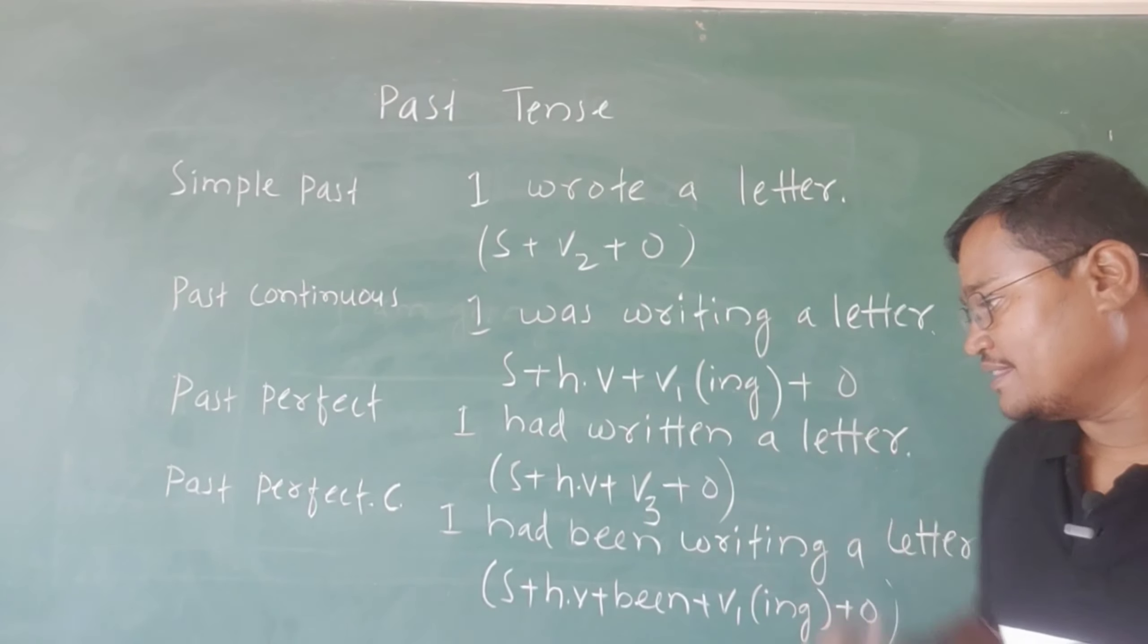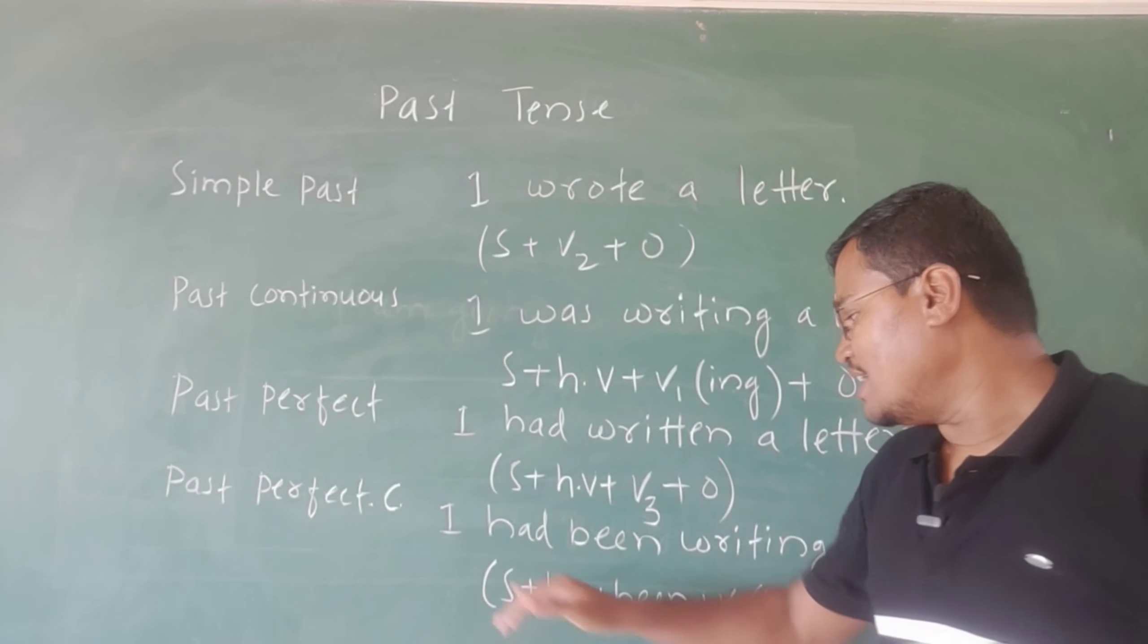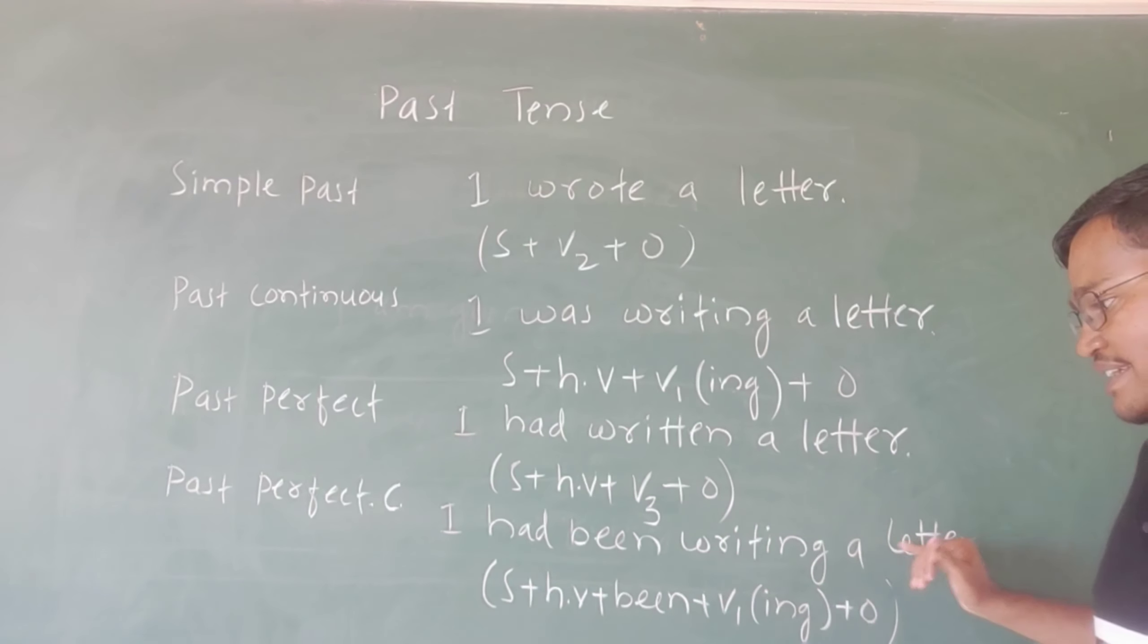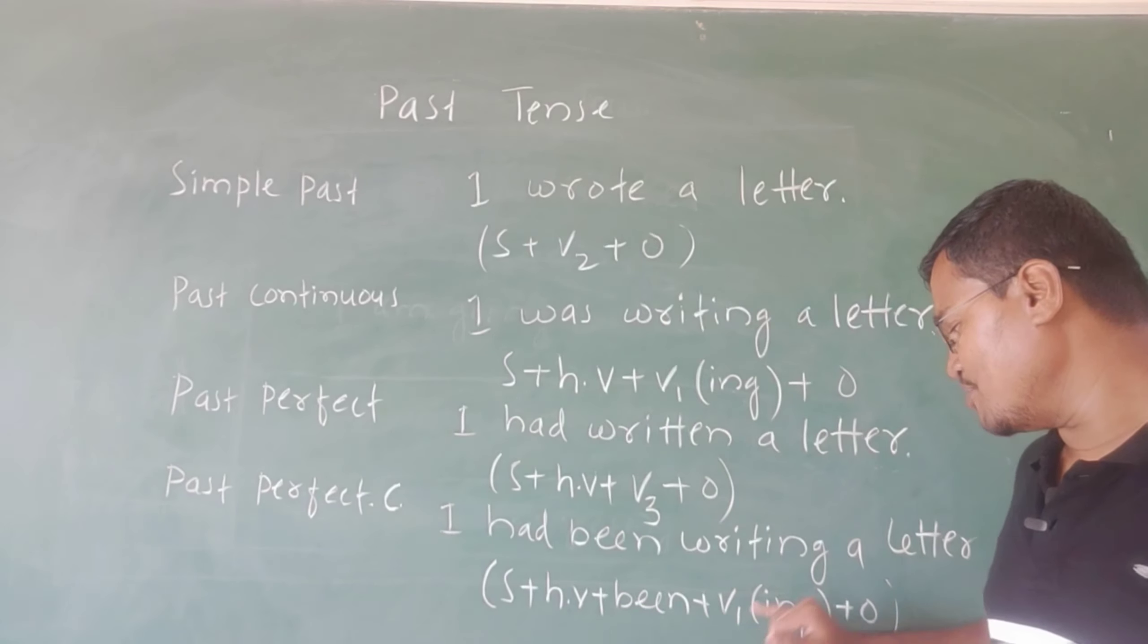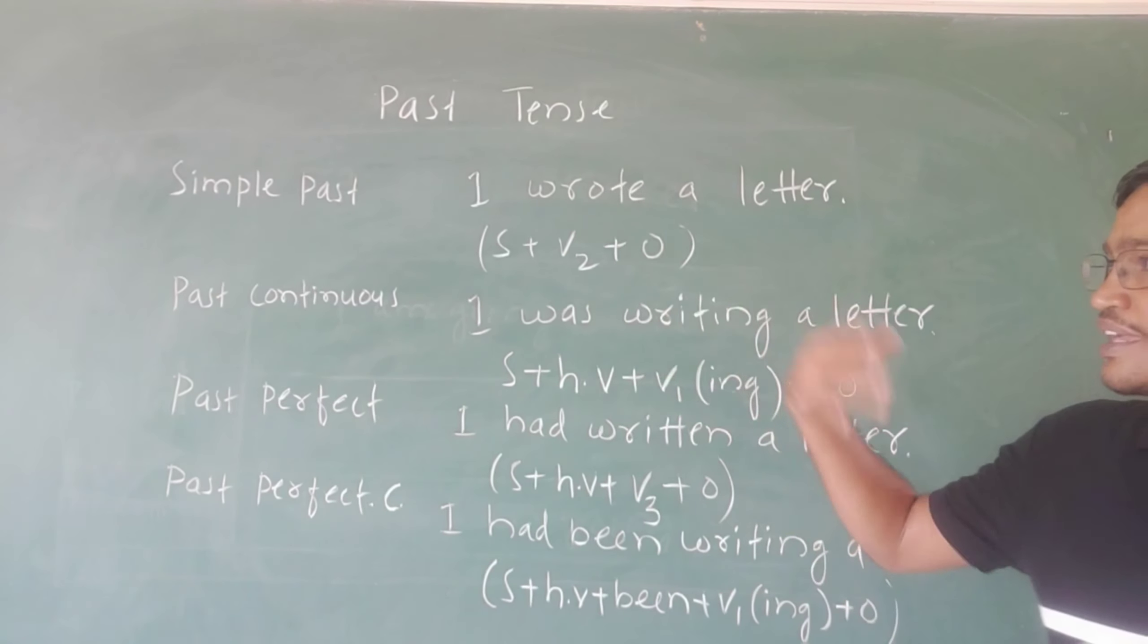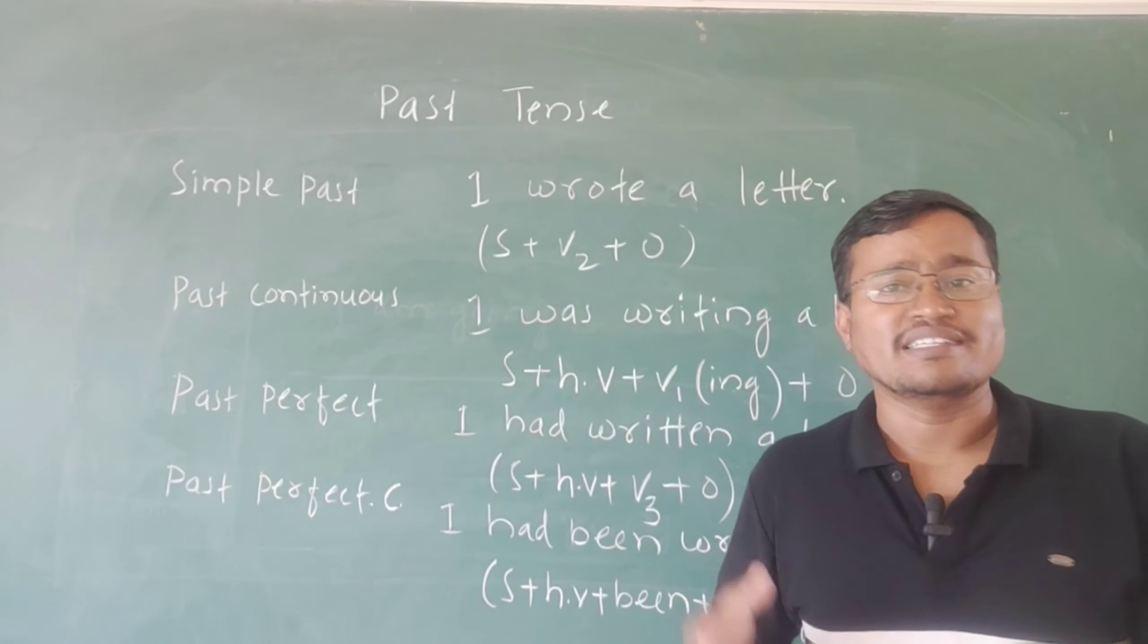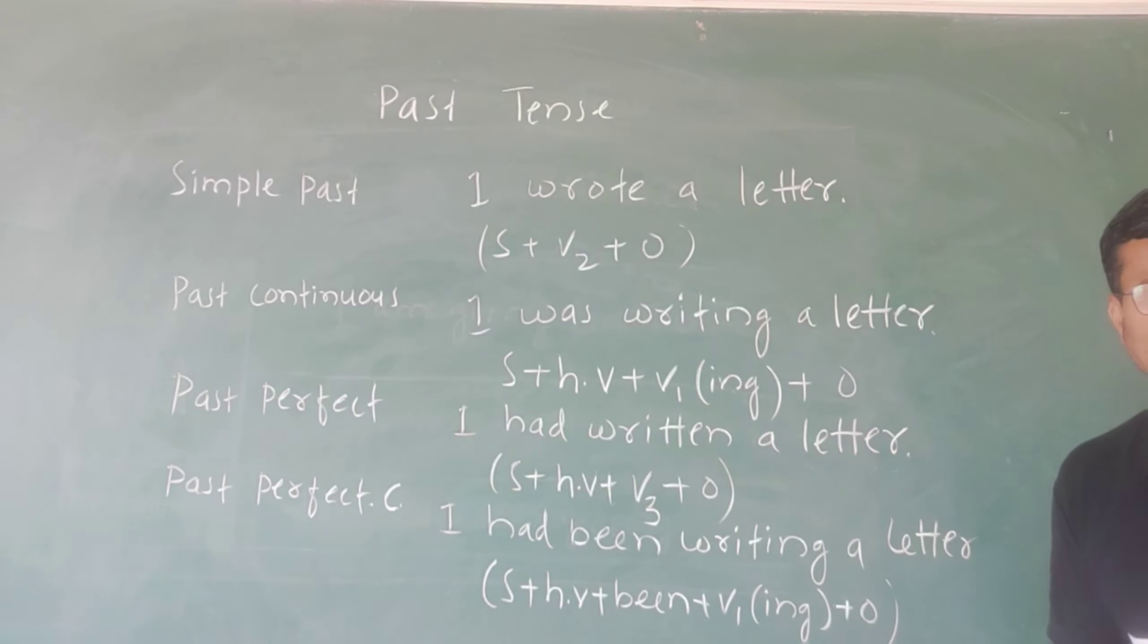Last one is past perfect continuous: 'I had been writing a letter' - subject plus helping verb plus being plus V1 plus ing plus object. So I hope you got the concept here.